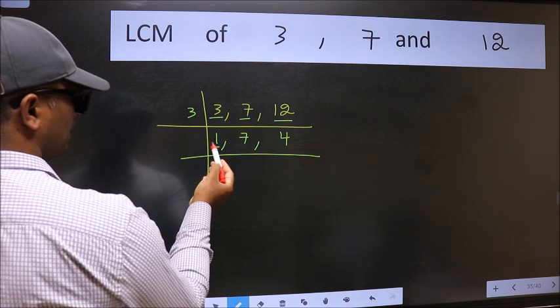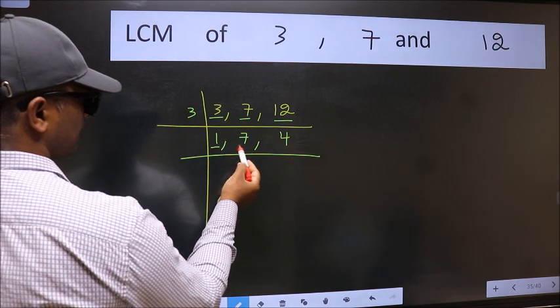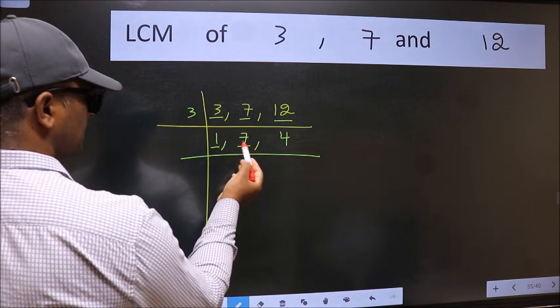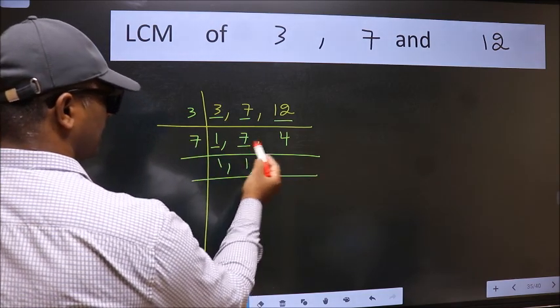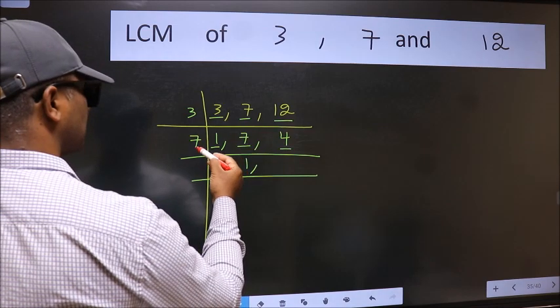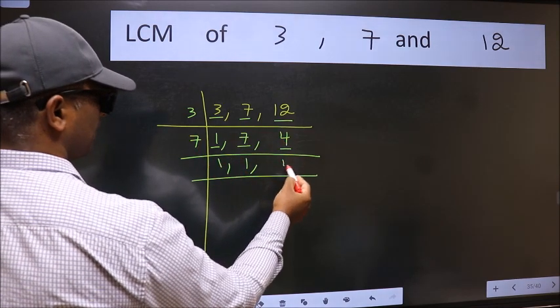Now we got 1 here so focus on the next number 7. 7 is a prime number so 7 divides 7. The other number 4, not divisible by 7 so we write it down as it is.